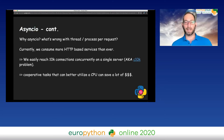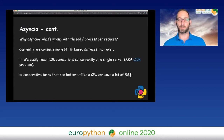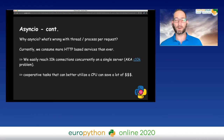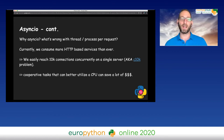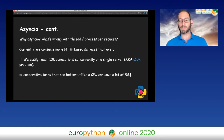Why async IO? What's wrong with thread per request or process per request? Currently, we consume more HTTP services than ever. We can quite easily reach 10,000 concurrent connections on a single server, aka the C10K problem. As a result, a cooperative task that can better utilize the CPU on a single machine can save us a lot of money.